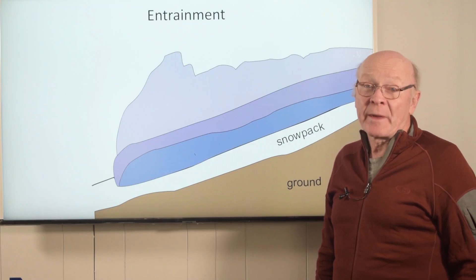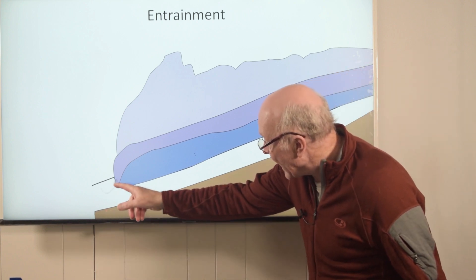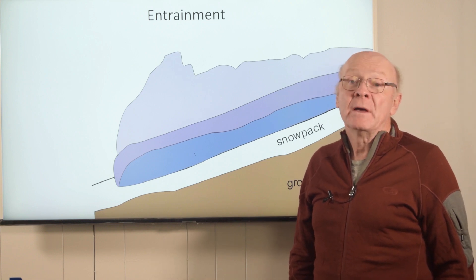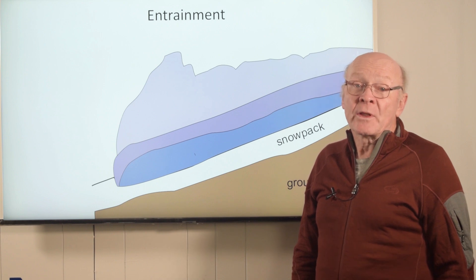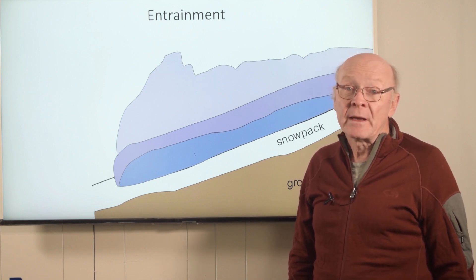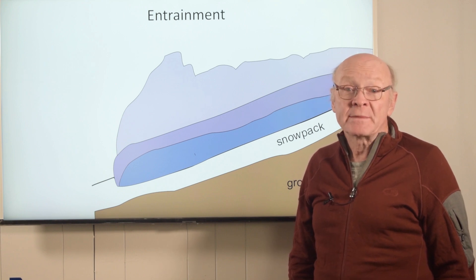Looking at this diagram again, we see that the snow from the stationary snowpack is being entrained into the avalanche. This is the most common way, but not the only way in which an avalanche increases in mass. While the mass of a small avalanche may not change much as it moves down slope, the mass of a large avalanche can increase up to five times, sometimes more.